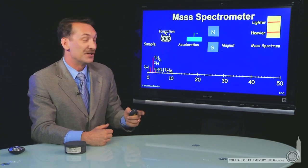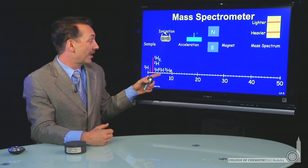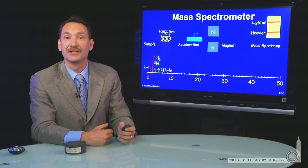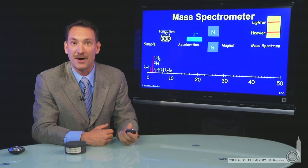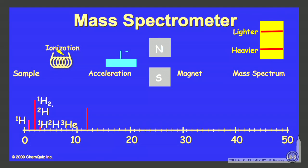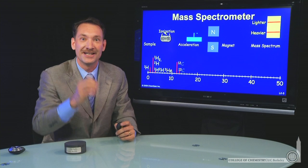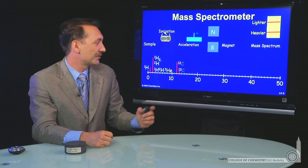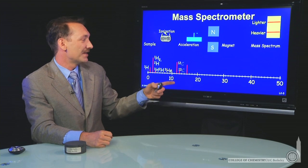So mass 3, that could be tritium. Or it could be a molecule of deuterium and hydrogen hooked together to form a hydrogen molecule. And you can go through, think about several different things. Here at mass 12, we'd maybe expect that to be carbon 12. And at mass 13, carbon 13, if we injected some carbon into our mass spectrometer.